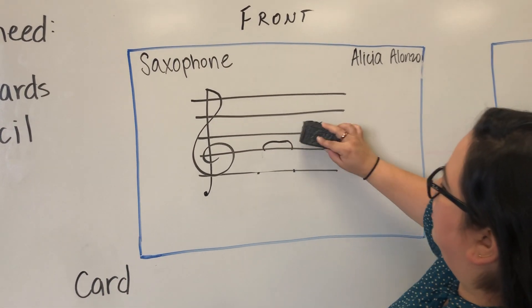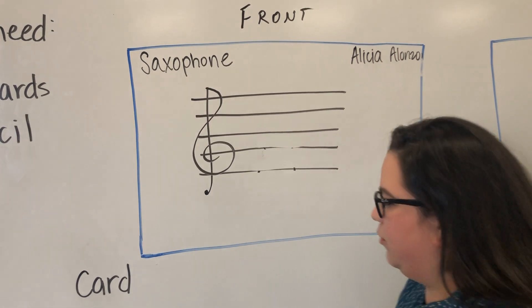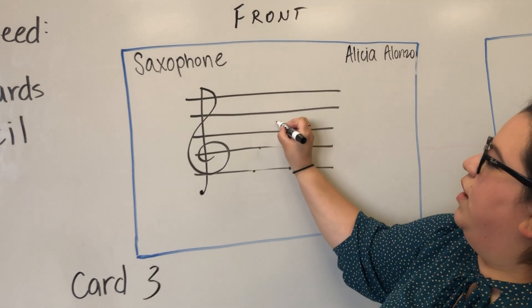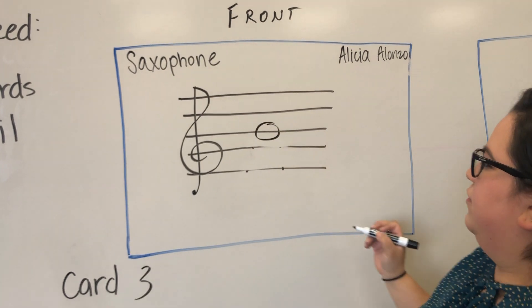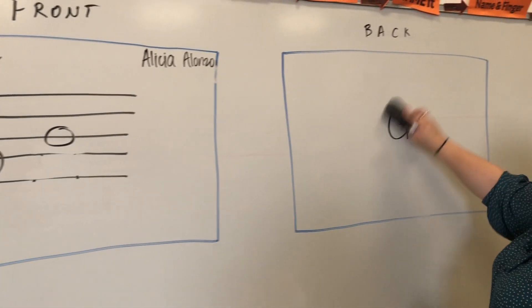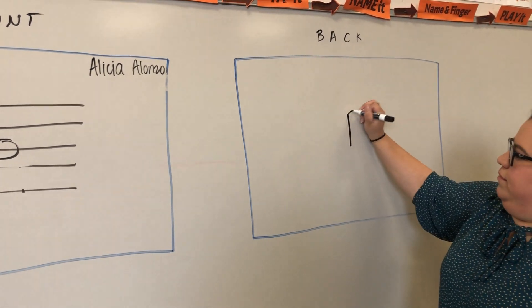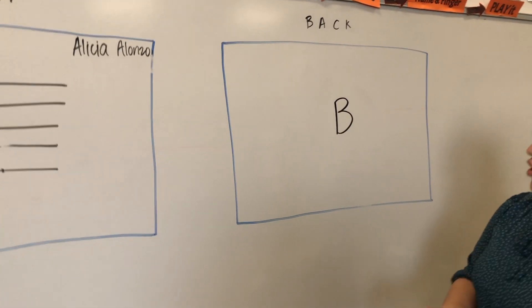You're probably guessing what we're doing. Card three: you're going to draw a whole note around the third line up, which is 'Every Good Boy' starts with a B. So it's your B line, your third line up.